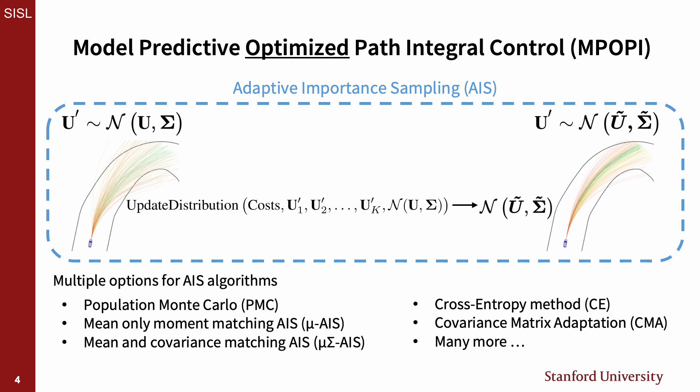There are many AIS algorithms with different performance costs and benefits. We implemented five different AIS algorithms with MPOPI for our experiments. In this work, we focused on the integration of AIS algorithms into MPPI and left the investigation of specific trade-offs of different algorithms for future research.